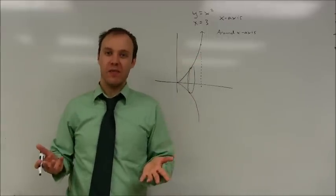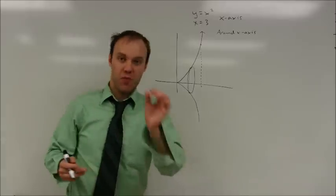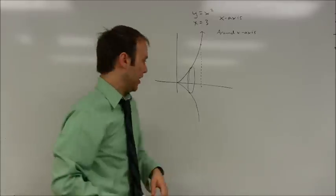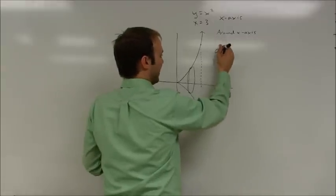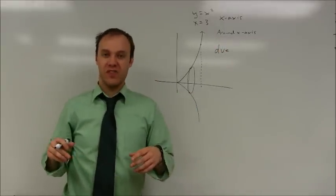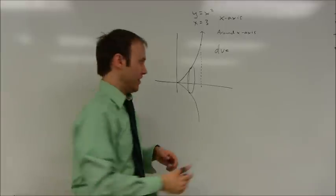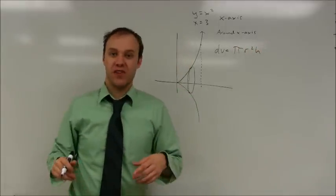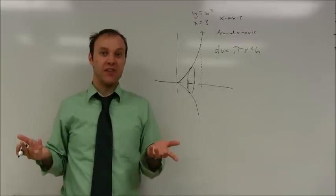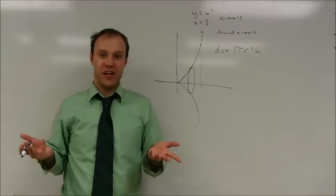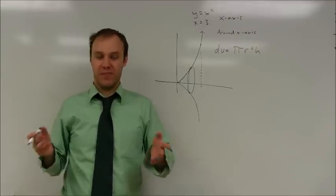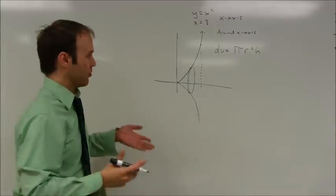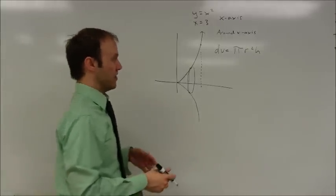The way we can find that sum is by using an integral. The volume of one of those disks - dV, the change in volume as you move along - is just the volume of a cylinder: pi r squared h. Really the only calculus that happens here is figuring out the sum using an integral. Beyond that, this is really just algebra and graphing, writing in terms of different variables.